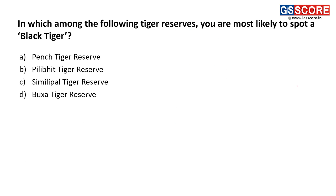Next question: in which tiger reserve are you most likely to spot a black tiger? A black tiger is not a new species — it is the same tiger but with a different color. It is likely to be seen in Simlipal Tiger Reserve of Odisha. The answer is C.